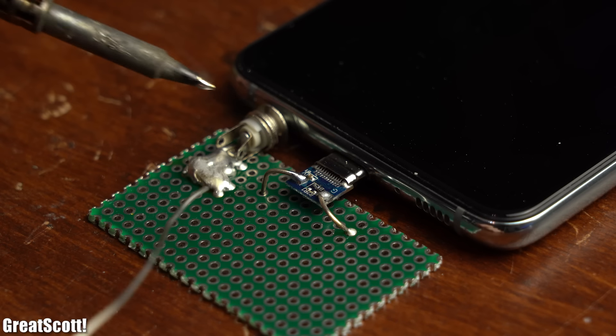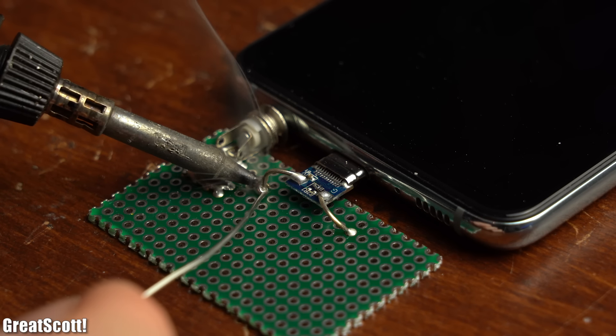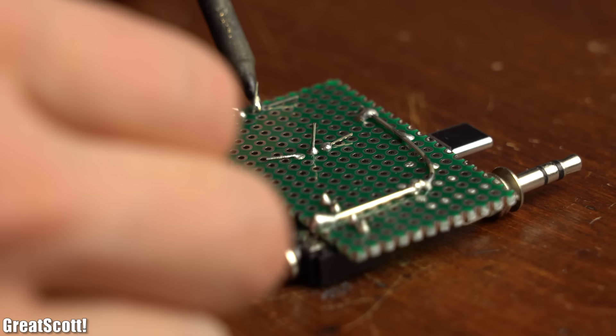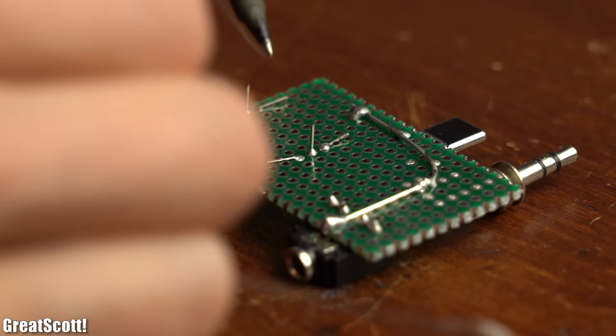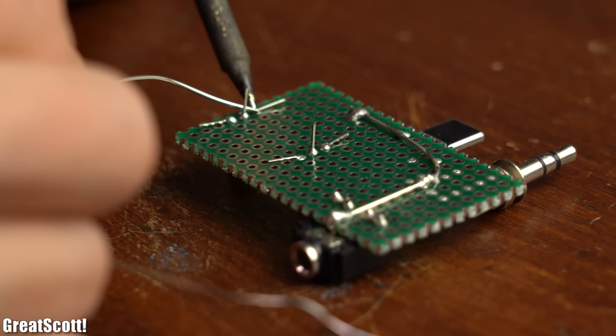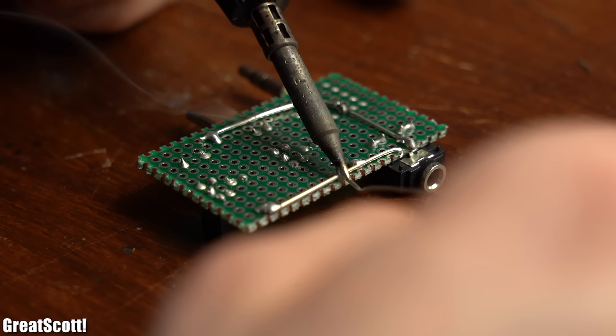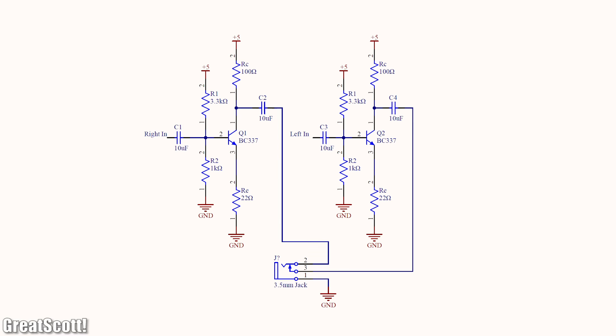So I soldered this connector along with an audio jack to a piece of perfboard, around which I then added all of the components for the stereo class A amp, which I then soldered to one another according to this finalized schematic.